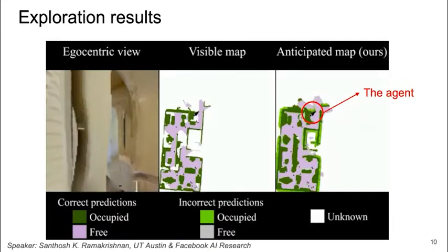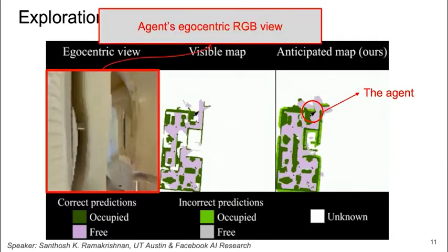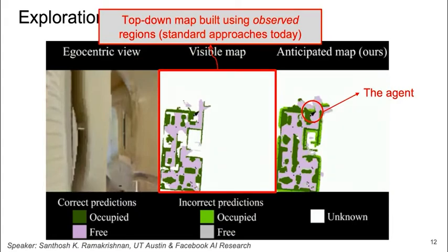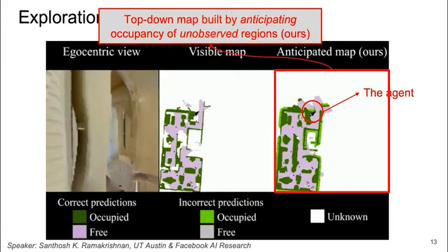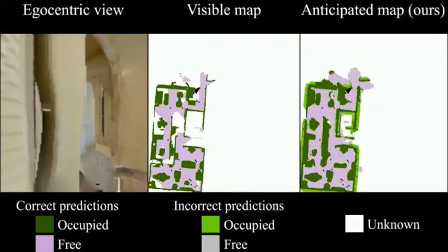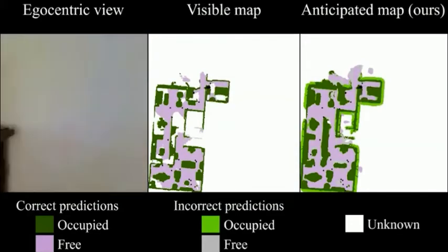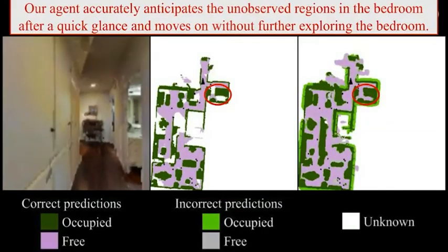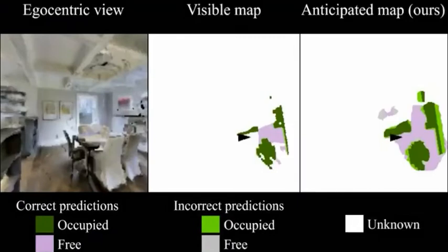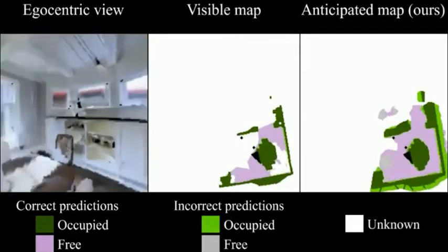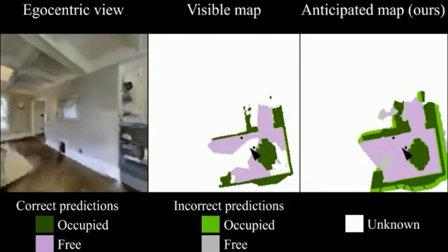We show examples of intelligent exploration behaviors arising from anticipating occupancy. The outputs contain the first-person agent view, the top-down map built purely using visible occupancy, and the top-down map built via anticipation. Here, the agent enters the bedroom, quickly maps the room with intelligent anticipation, and moves on to the next room. Similarly, in this case, the agent quickly previews the dining room, accurately maps via anticipation, and moves on.